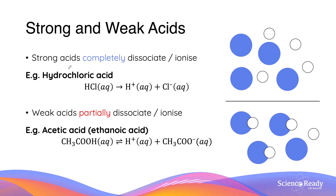Among acids, there are strong and weak acids. By definition, strong acids completely dissociate or ionize. For example, if there are four molecules of strong acid, all four molecules would dissociate to produce four hydrogen ions. A common example of this is hydrochloric acid. When writing the chemical equation for strong acid dissociation, a single forward arrow is used to indicate the process is complete.